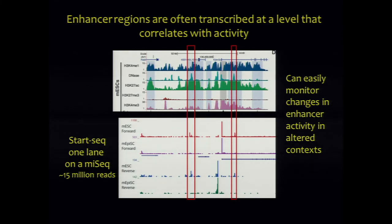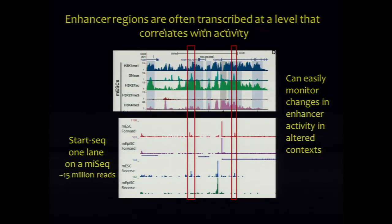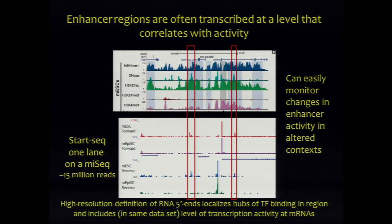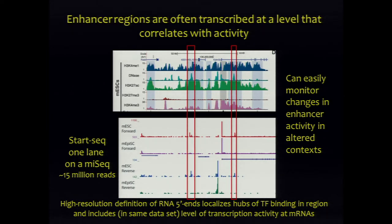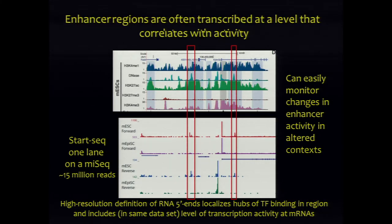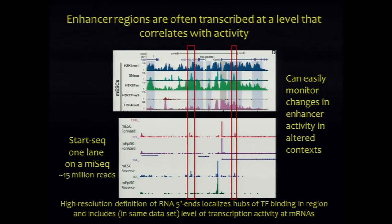In a single lane on a MiSeq, we can easily monitor changes in enhancer activity in these altered contexts. And because it's a high-resolution definition of five-prime ends, we've looked around these five-prime ends to understand which transcription factors are present or absent in ESCs versus epi-SCs. This is much easier to do when you're looking 200 base pairs upstream of a promoter-like site than in a 6 KB region.